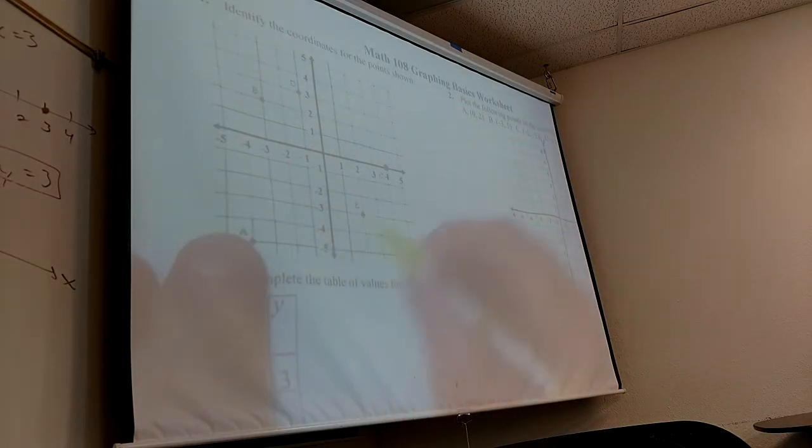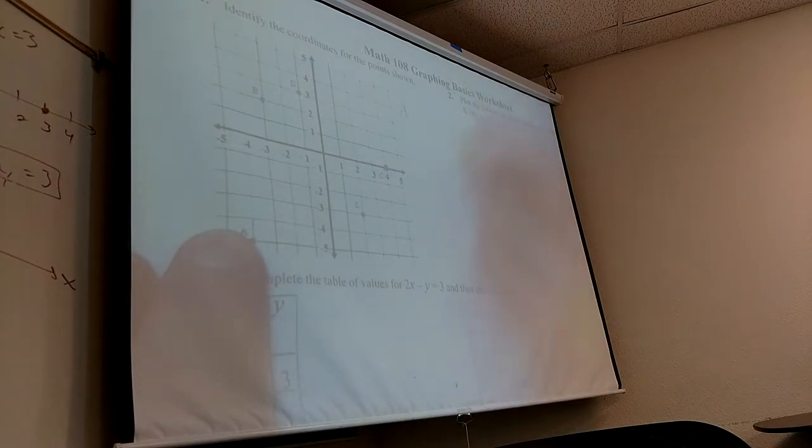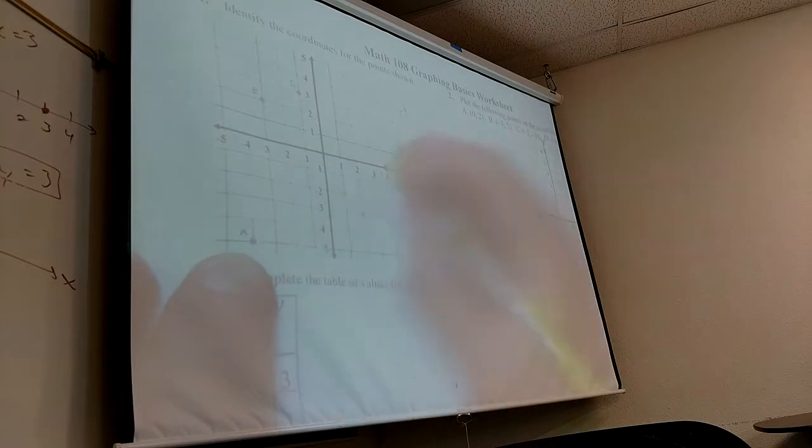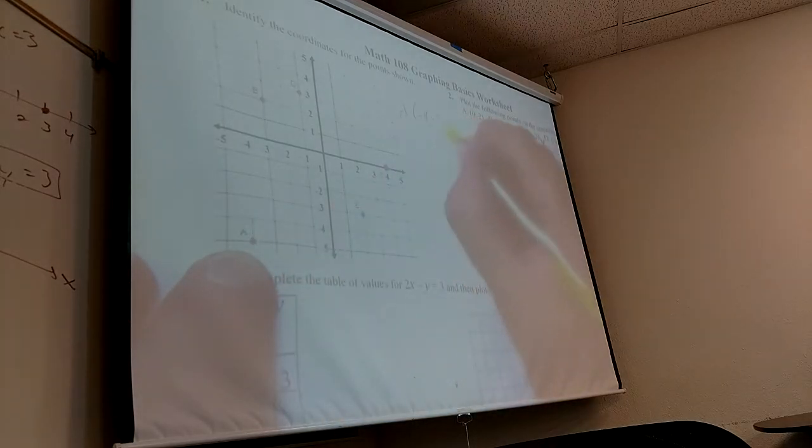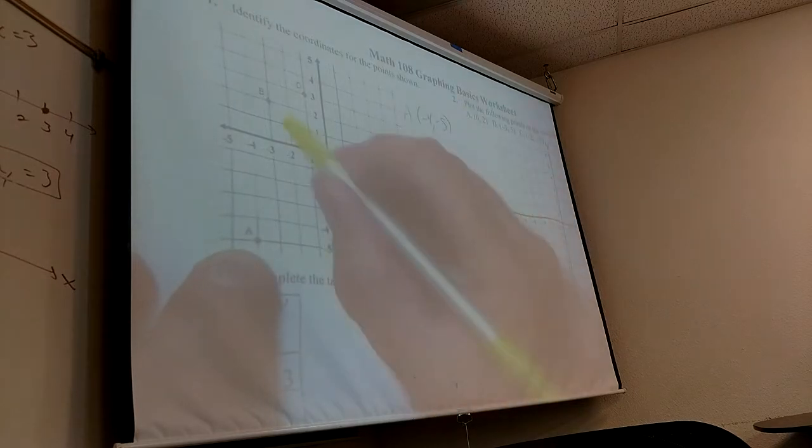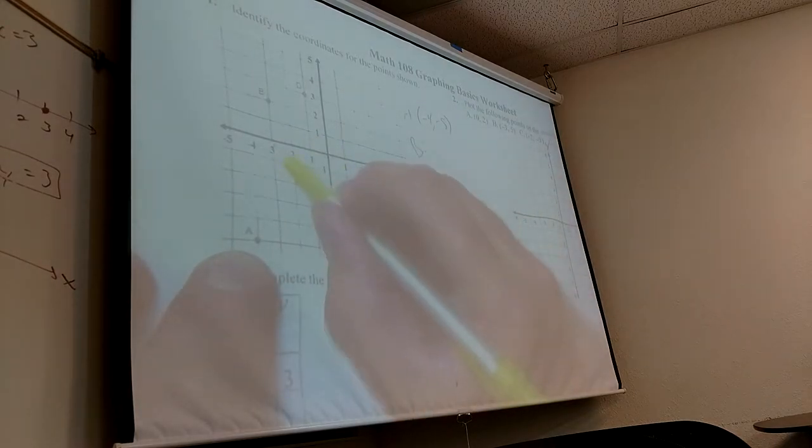So what's the coordinates for A here? Back four, down five. So negative four, negative five. What about B? Back three, up two.